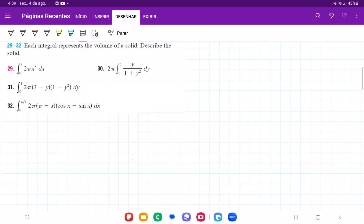So for number 29, they want us to describe the solid, given that this integral here represents the volume of a solid. So all we're doing here is we're reverse engineering it to get the original situation that led to this integral.